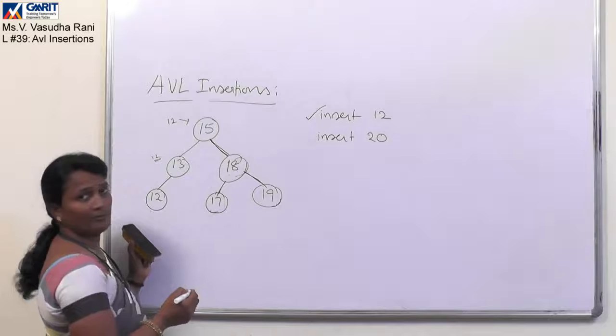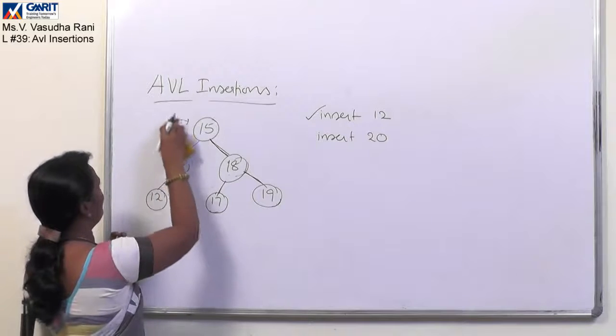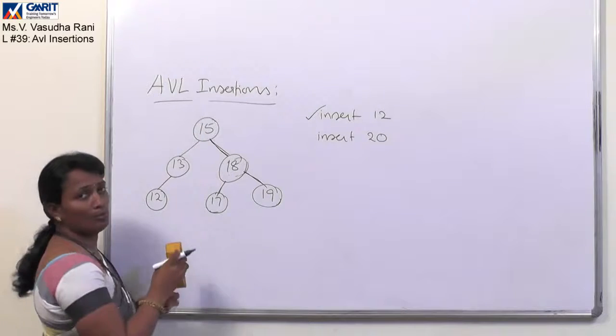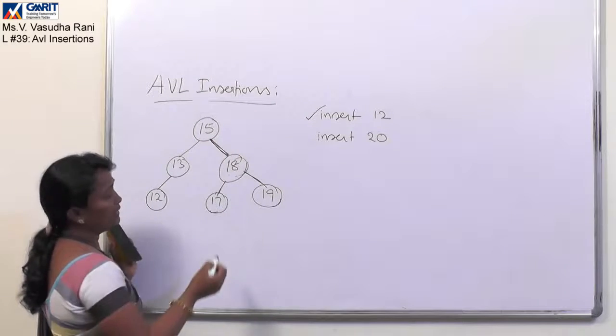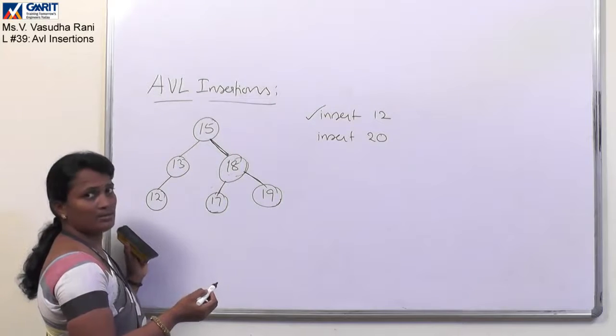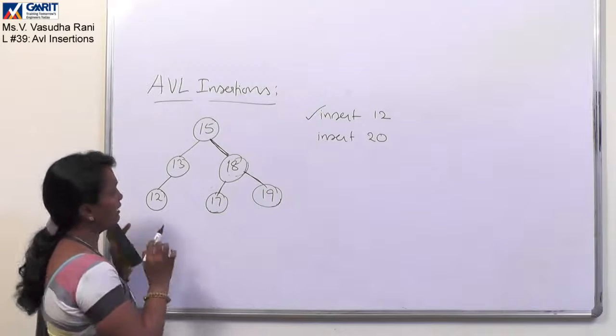Now this is our tree. Now is it AVL or not? We have to check after inserting a new node whether it is violating any of the balanced factor at any particular node. We have to check it.